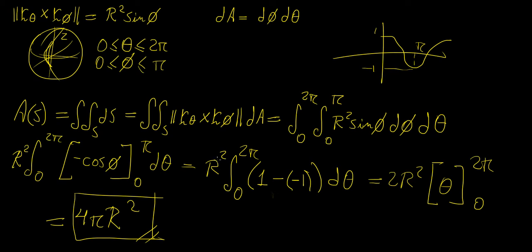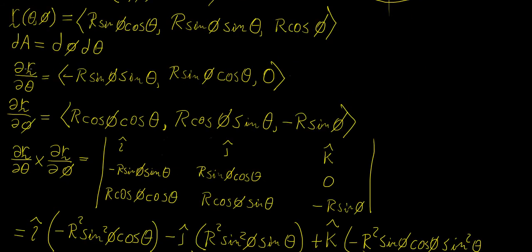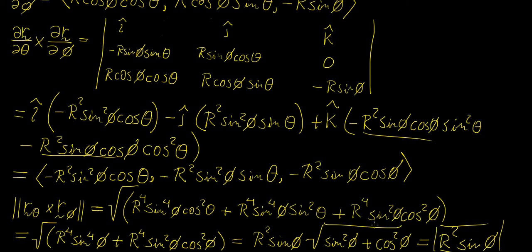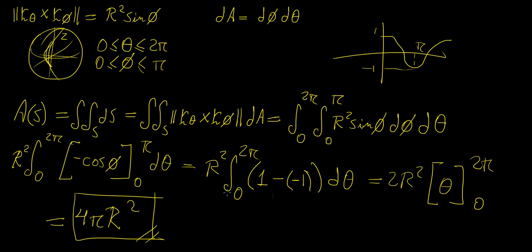Hopefully this has given you an idea of how to use oriented surfaces to evaluate surface integrals. We showed a parametric representation of spherical coordinates by keeping r constant, then differentiating with respect to theta and phi, taking the cross product, and taking its magnitude — all leading to the answer 4πr². Surface integrals are quite involved, so expect to spend significant time on them. In later videos, we'll continue with more examples showing how surface integrals can be used in other ways.